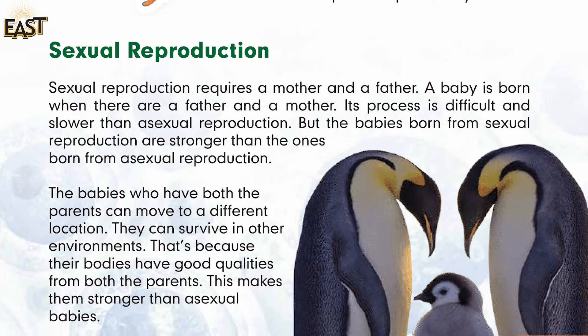Sexual reproduction requires a mother and a father. A baby is born when there are a father and a mother. Its process is difficult and slower than asexual reproduction — repeat: its process is difficult and slower than asexual reproduction. But the babies born from sexual reproduction are stronger than the ones born from asexual reproduction.